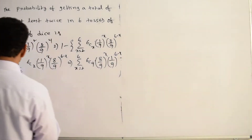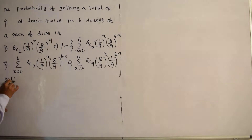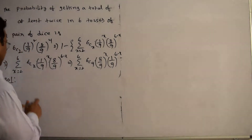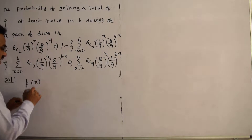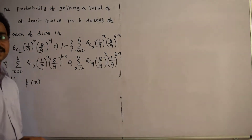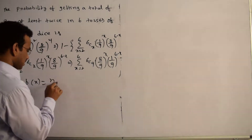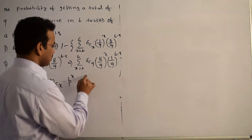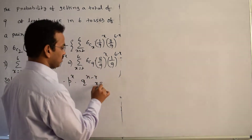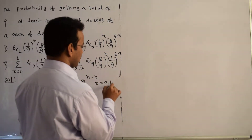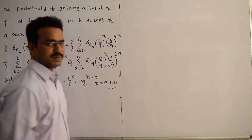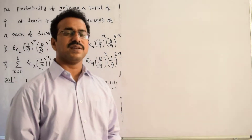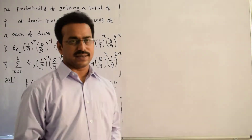Solution. The binomial distribution probability mass function is: P(X) = nCx · p^x · q^(n−x), where x = 0, 1, 2, and so on, depending on the number of successes out of n trials.